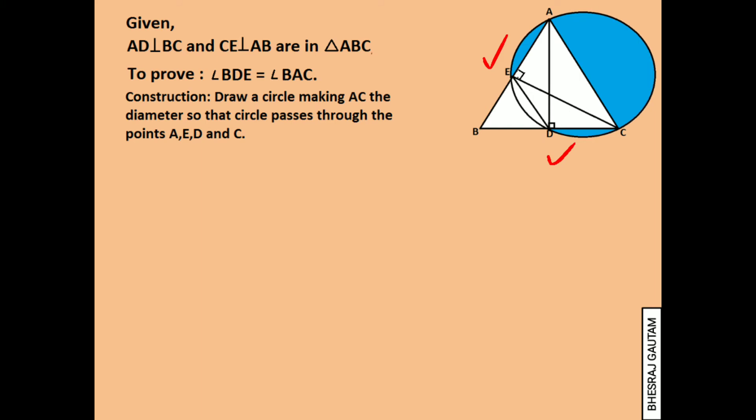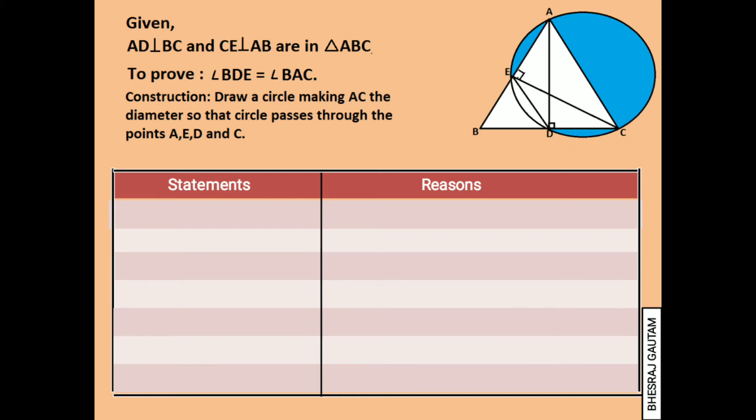Now we can flow with steps easily with the help of a statement-reason table. First of all, inside the circle, angle DAC plus angle DAE equals angle BAC, being the total angle by addition.